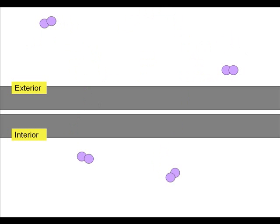After the system reaches equilibrium, the molecules may still randomly pass through the membrane, but there will be no net movement.